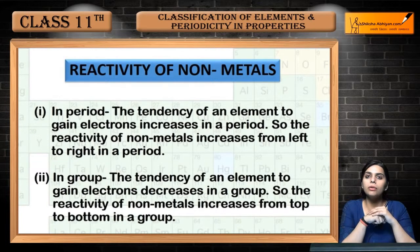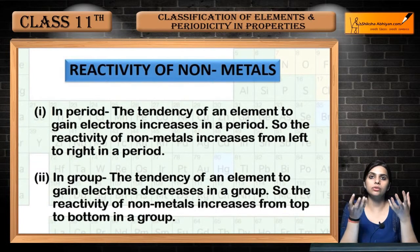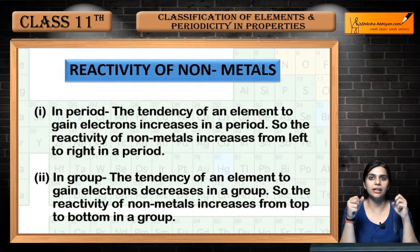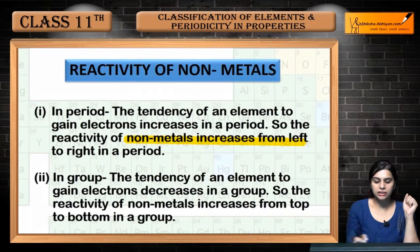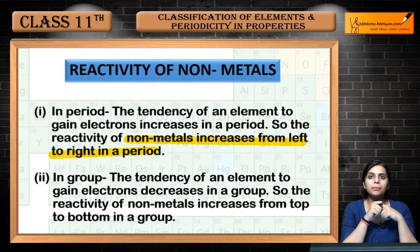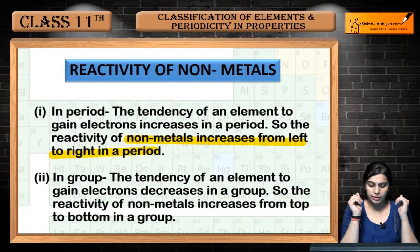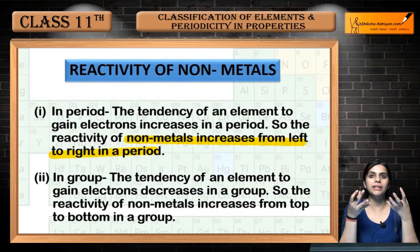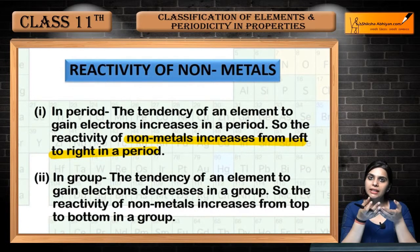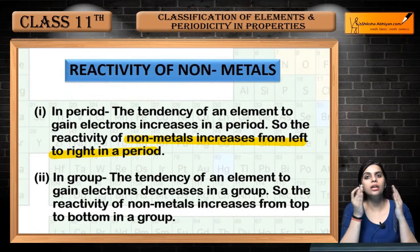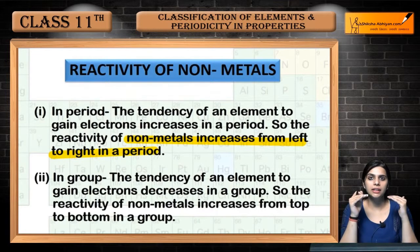Now if we talk about the reactivity of non-metals — non-metals gain electrons. As we move from top to bottom down the group, electrons are not gained as easily. When electrons are not easily gained, the reactivity will also decrease. So on moving from top to bottom, the reactivity of non-metals decreases.